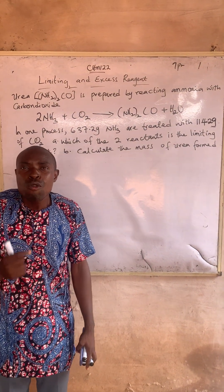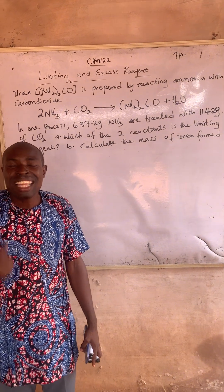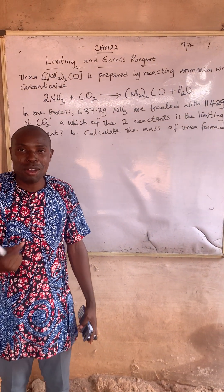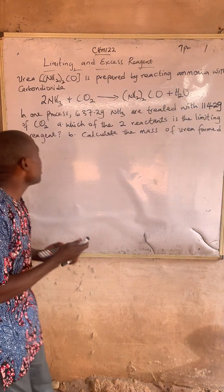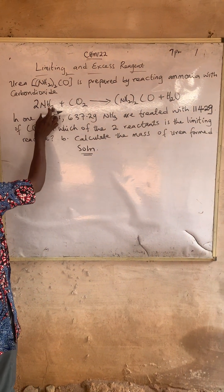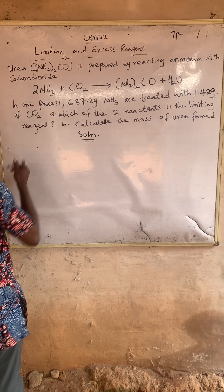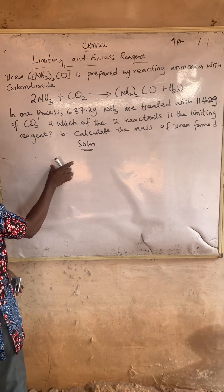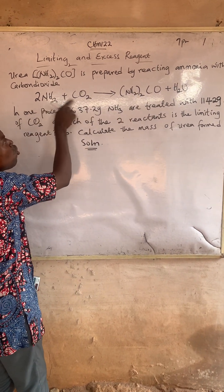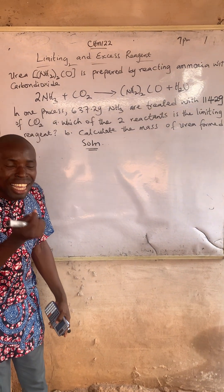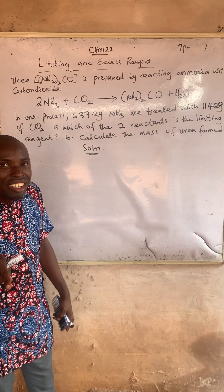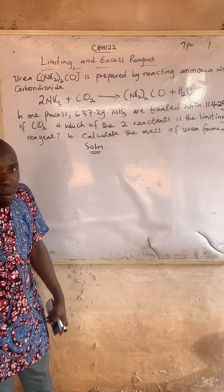I'll be giving you a short procedure which I've used to teach students all over the world countless times. Follow my procedure, and with it you can solve other subsequent questions of this type. We relate the values together. I will relate the mass of ammonia to that of Urea in one process, and in another process I also relate the mass of CO2 to that of Urea. Between these two reactants, whichever gives the smaller amount of product — Urea here — will be the limiting reagent and will also give me the mass of Urea formed.